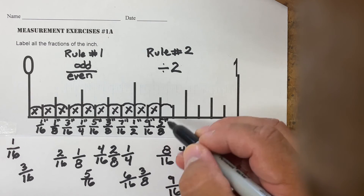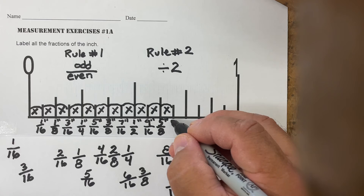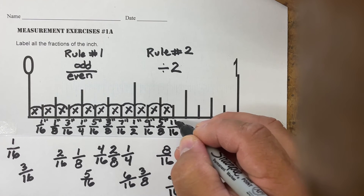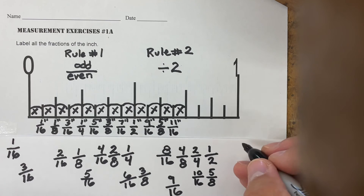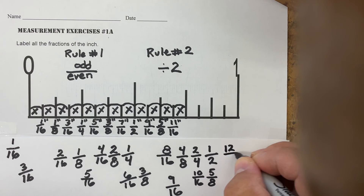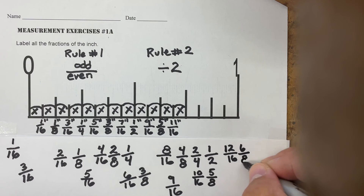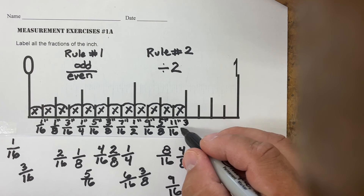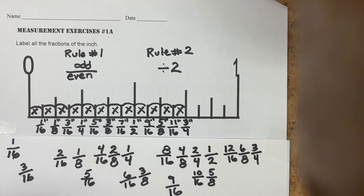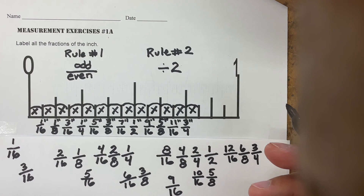The next one: I have eleven sections out of a possible 16. Eleven over 16 is already odd over even, so my final answer is eleven-sixteenths of an inch. The next one gives me twelve sections out of 16. Two goes into twelve six times, two goes into 16 eight times — six over eight, still not odd over even. Divide again: two goes into six three times, two goes into eight four times. Now it's odd over even, so the answer is three-fourths of an inch.